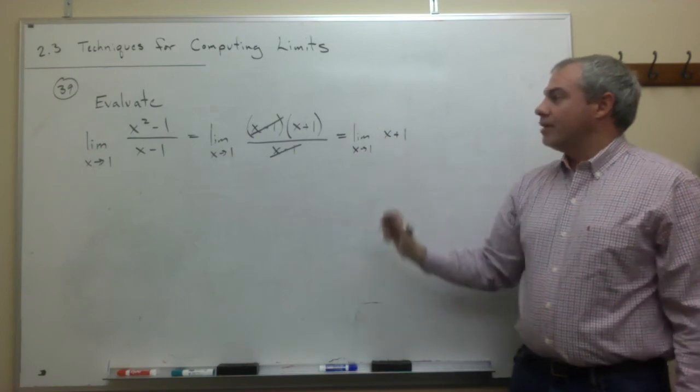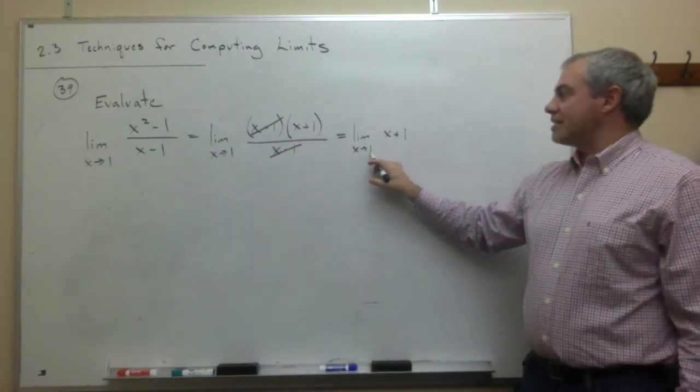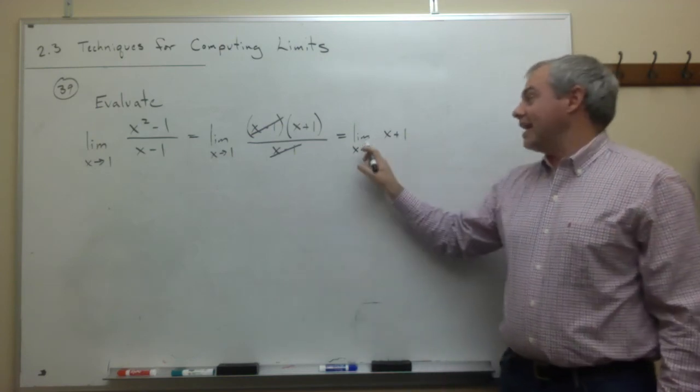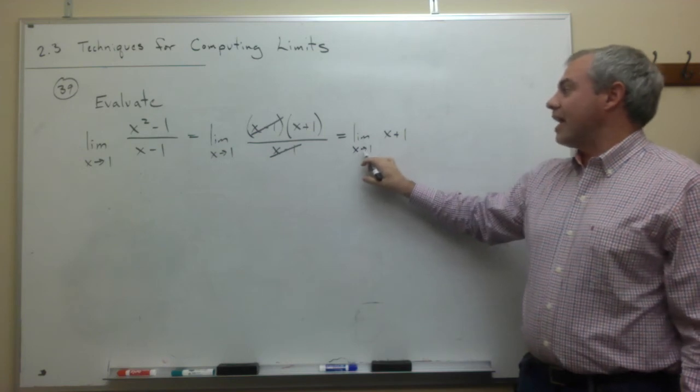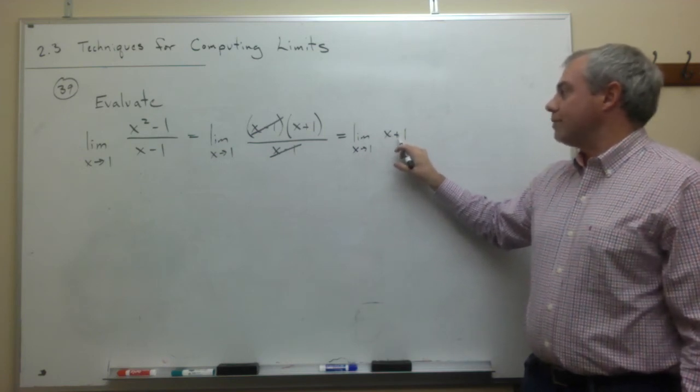This is a better form than I had to begin with, because now if I plug in that x is equal to 1, I don't get division by 0. So I can get the answer here just by plugging in that x is equal to 1. If I put in a 1 for x here, I get 1 plus 1, which is 2.